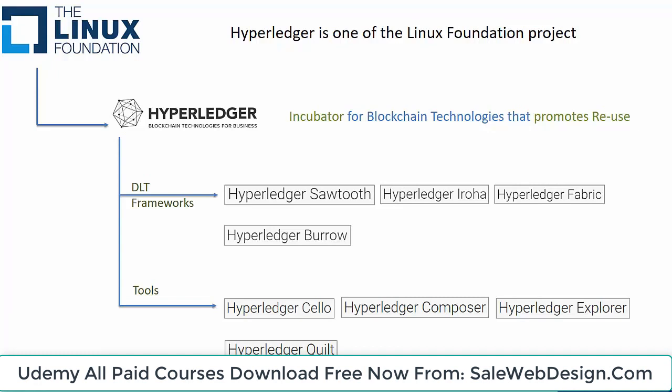Cello is an initiative that aims to simplify creation and management of blockchain infrastructure. Composer is for creating business network applications using the high-level composer language. Explorer provides visibility into an operational blockchain system. Quilt aims to achieve interoperability between different chains. The idea is that these tools will be reusable across the various DLT frameworks — for example, you may use Explorer to gain visibility into transactions regardless of which Hyperledger DLT you use. In this course, the focus is on Hyperledger Fabric and the Composer tool.